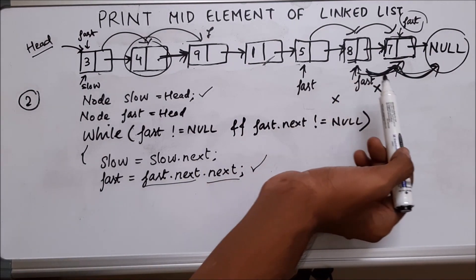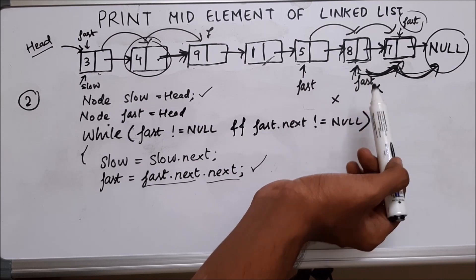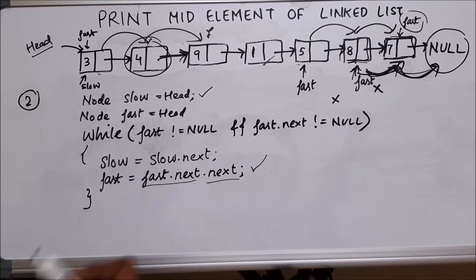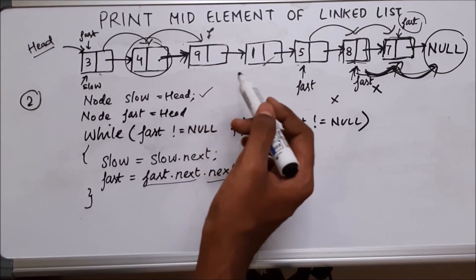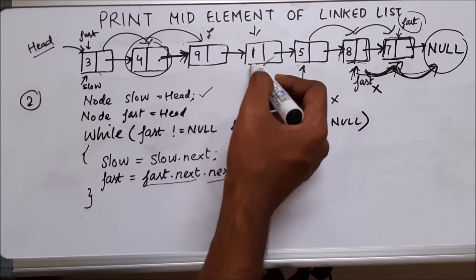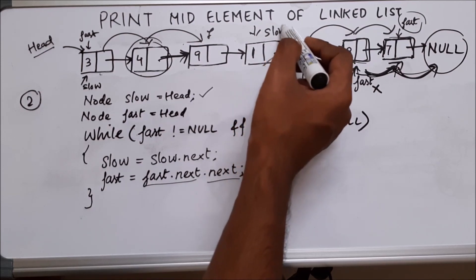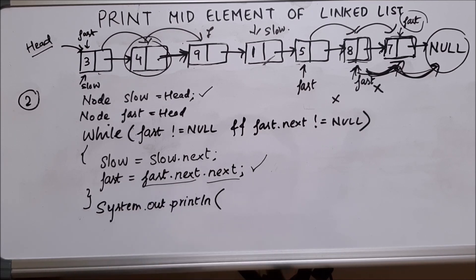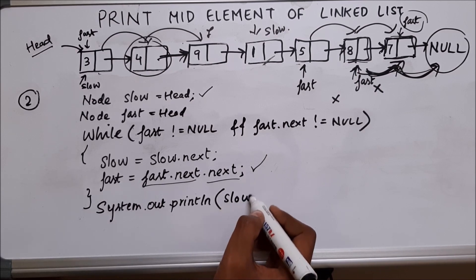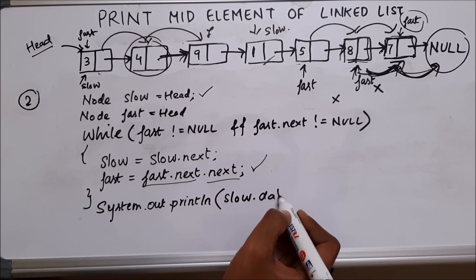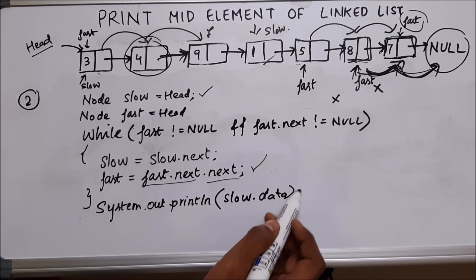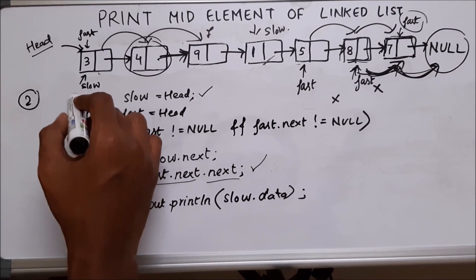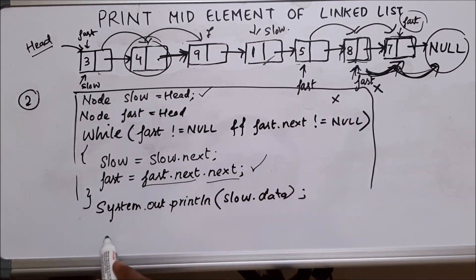Once fast reaches the last node, the while loop will terminate and we come out of the loop. At that point, our slow pointer will be pointing to the middle element. So we print slow.data. This is how you print the middle element of a linked list.